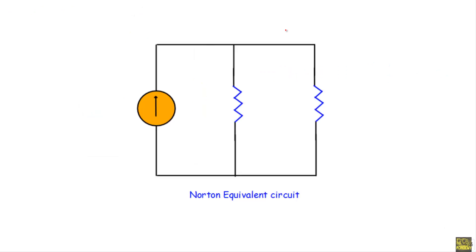If I draw the complete Norton equivalent circuit, it will look like this: the load resistance R_L equals 24 ohms, and the Norton resistance R_n, which I have just calculated, equals 3.75 ohms. After that we will calculate the Norton current I_n.